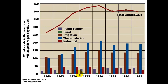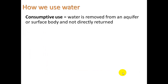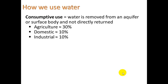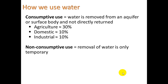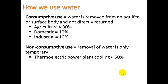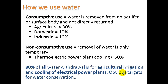The last category is rural — for people on well systems as opposed to public water supply. Consumptive use means water is removed from the aquifer or surface body and not directly returned. Non-consumptive use means removal of water is only temporary — power plant cooling is non-consumptive, and hydroelectric is another example where water just passes through a dam. The bottom line: 80% of all water withdrawal is for agricultural irrigation and cooling of electric power plants — these are obvious targets for water conservation.